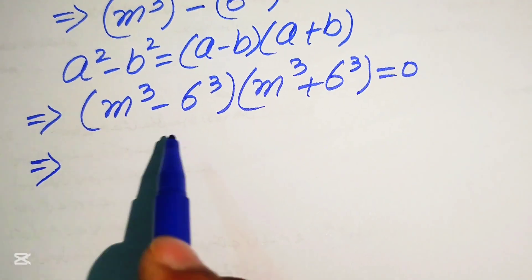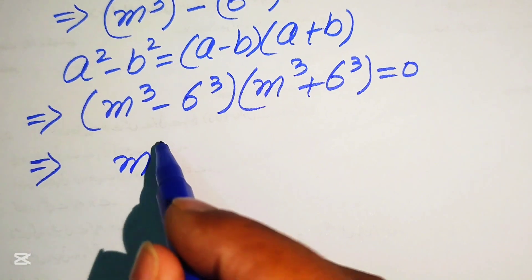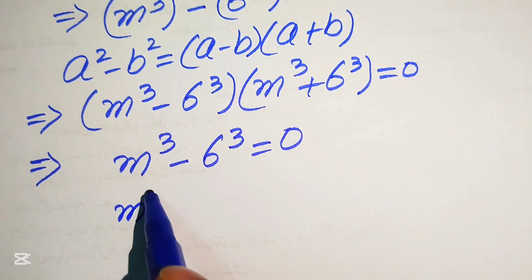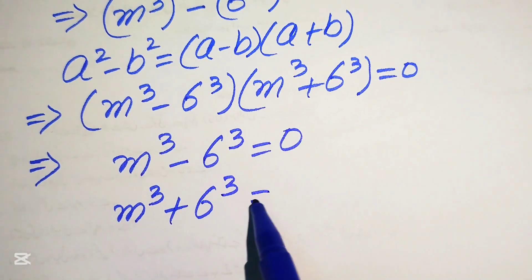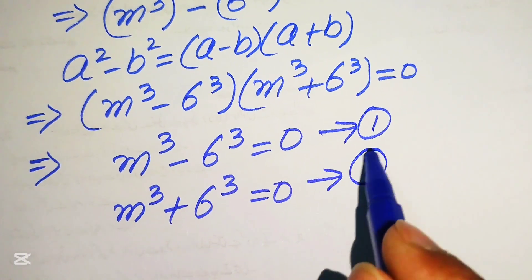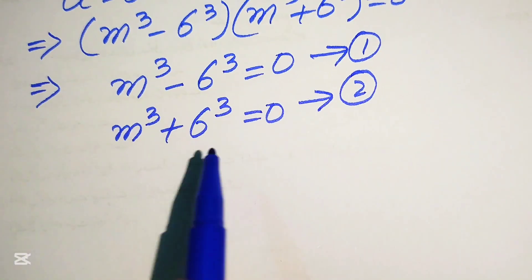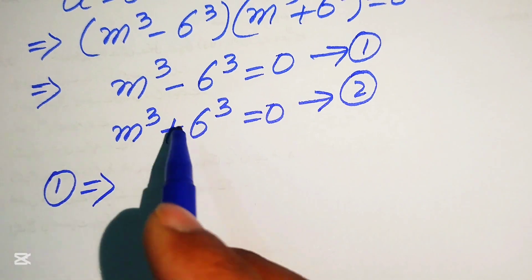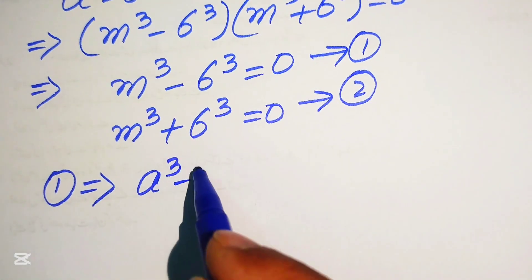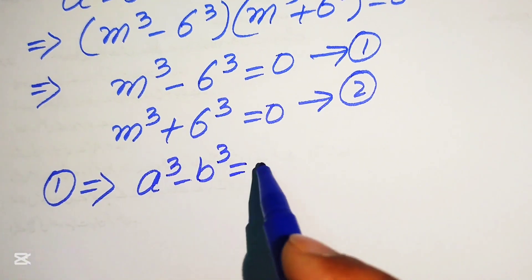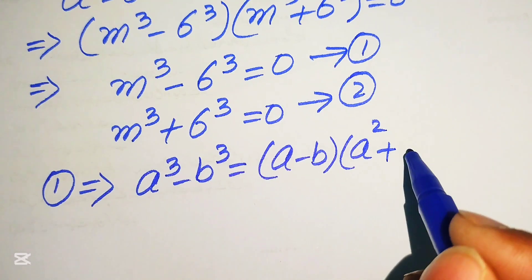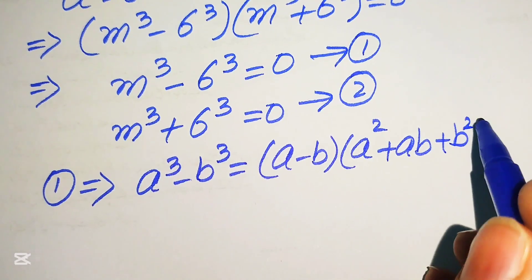We divide this into two cases: Case 1 is m cubed minus 6 cubed equals to 0, and Case 2 is m cubed plus 6 cubed equals to 0. For Case 1, we apply the cubic formula: a cubed minus b cubed equals a minus b times a squared plus ab plus b squared.